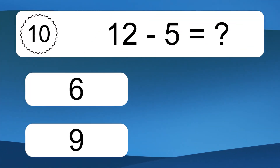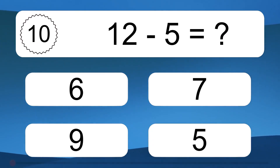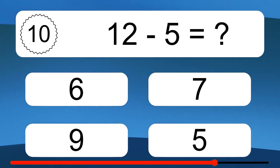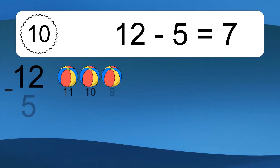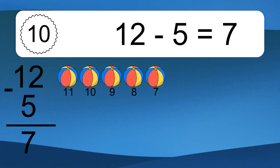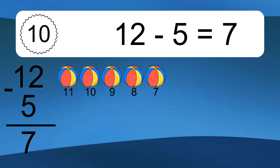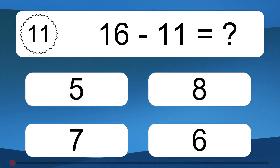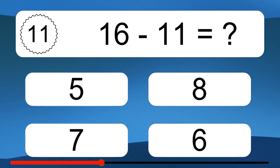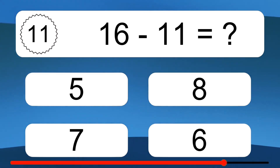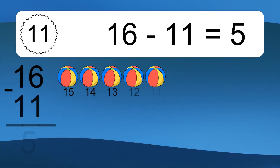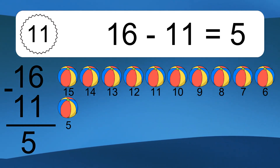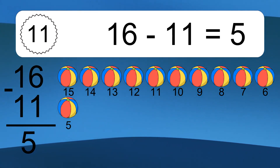12 minus 5 equals what? 12 minus 5 equals 7. Let's count it: 11, 10, 9, 8, 7. 16 minus 11 equals what? 16 minus 11 equals 5. Let's count it: 15, 14, 13, 12, 11, 10, 9, 8, 7, 6, 5.